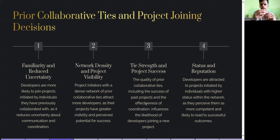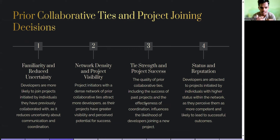Prior collaborative ties and project joining decisions involve four key factors. First, familiarity and reduced uncertainty: developers are more likely to join projects initiated by individuals they have previously collaborated with, as it reduces uncertainty about communication and coordination. Second, network density and project visibility: projects with a denser network of prior collaborative ties attract more developers.